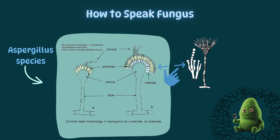Aspergillus is one of several molds that produces conidia in chains. The conidia always arise from the phialides. If there are two rows of cells, the first row are called metulae. Species with metulae and phialides are called biseriate, while those species with only one row of cells — the phialides — are called uniseriate. Penicillium is a similar and famous genus of mold with similar structures to Aspergillus, minus the vesicle.